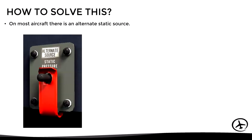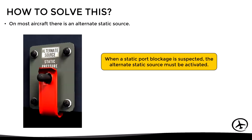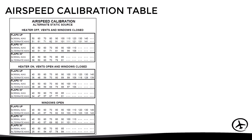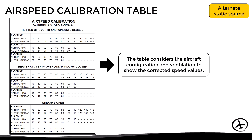Once a static port blockage has been identified, most aircraft have an alternate static source which allows static pressure to enter the system. When suspecting a static port blockage, this alternate static source must be activated. However, the static pressure from this alternate source is slightly different from the real one, so it is necessary to consult the correction tables for the airspeed indicator published in the aircraft manual. This correction table considers aircraft configuration and ventilation to show corrected speed values, and it is important to ensure the table used is for the alternate static source rather than the normal one.